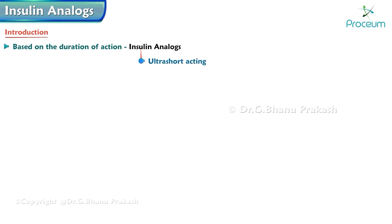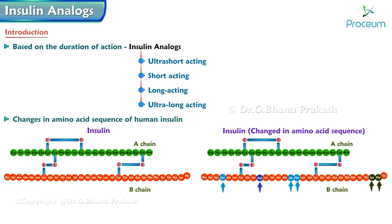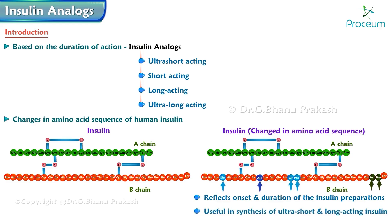Based on the duration of action, insulins are classified as ultra short-acting, short-acting, long-acting, and ultra long-acting. Changes in the amino acid sequence of human insulin affect the onset and duration of the insulin preparations.